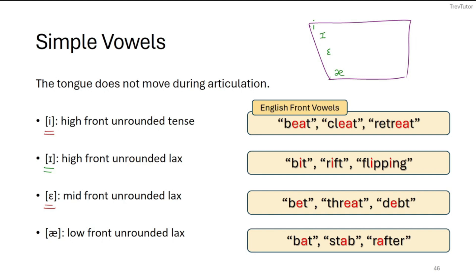Then we have /æ/, which is a combination of 'a' and 'e' — you can write it in one fell swoop or as two separate letters. This is our low front unrounded lax vowel, as in 'bat,' 'stab,' and 'rafter.' This symbol is called ash.